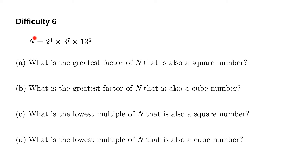In this video we're told we've got a number n, and what we have to do is look for certain factors and multiples of n that also happen to be square numbers or cube numbers. We're not actually given what n is exactly in terms of having all its digits, but we are given n as a product of prime factors. There's no point trying to work out exactly what that comes out to because if you stick these into your calculator you'll find it's got too many digits to show up in full. So we need to work with n as this product of prime factors.